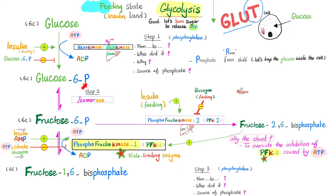Now you have glucose-6-phosphate. You need to convert that glucose into fructose — its isomer — because you can have more control over that isomer. You use an isomerase for that. In the first steps of glycolysis, we are actually sacrificing our own energy so that the reaction can proceed in a controlled fashion. Now you have fructose-6-phosphate. The key rate-limiting enzyme is phosphofructokinase, which adds a phosphate to fructose-6-phosphate at carbon number 1, giving you fructose-1,6-bisphosphate.